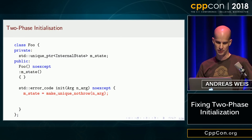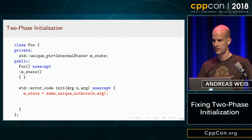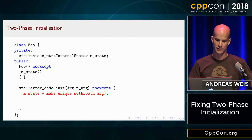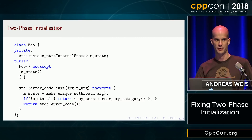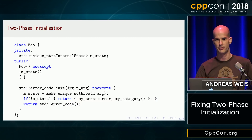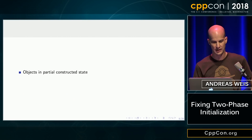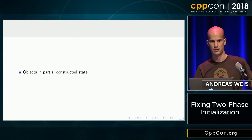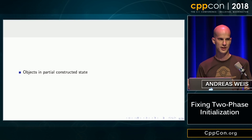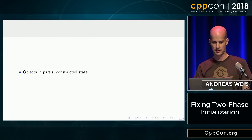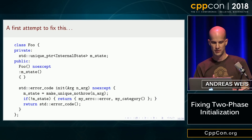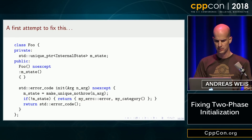Then we add a member function — init() or whichever name you prefer — and that member function performs all the actual work. Since this is now an ordinary function, we can use the return value to report back any error generated by initialization. Most of you have seen this pattern before, and those who have tried to use it will probably hate it, because it leads to objects in a partially constructed state. Once the constructor runs, the object is still not usable — you have to call init() first, and if you forget that, all hell breaks loose.